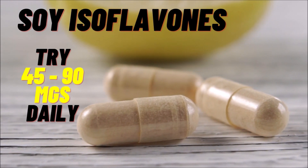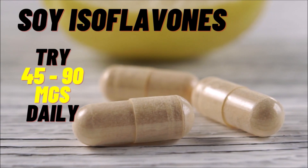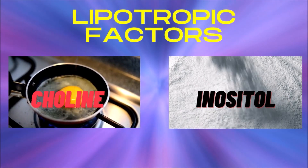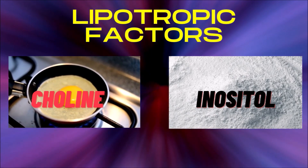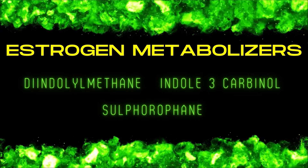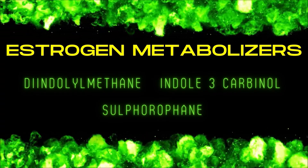The B vitamins inositol and choline have been used historically to support the body's detoxification of estrogen. These are what we call lipotropic factors, and lipotropic factors promote the removal of fat from the liver. Lipotropic supplements are usually a combination of vitamins and herbs designed to support the liver's function in removing fat, detoxifying the body's waste, and detoxifying external harmful substances like pesticides, flame retardants, and plastics. They are also helpful at metabolizing and excreting estrogens.